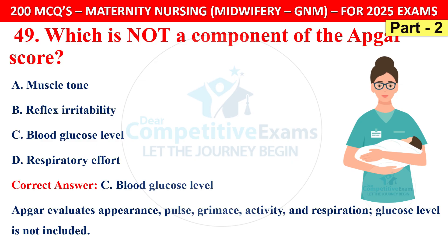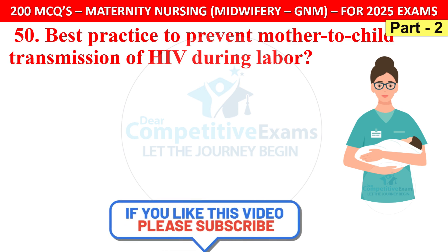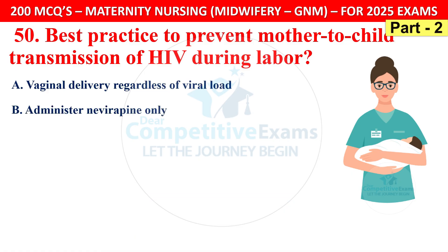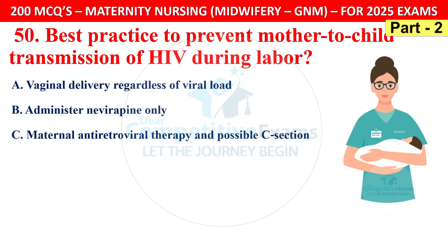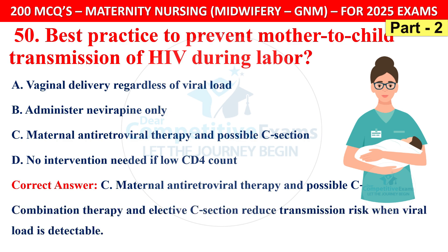Question 50: Best practice to prevent mother-to-child transmission of HIV during labor. The correct answer is C — maternal antiretroviral therapy and possible C-section. Combination therapy and elective C-section reduce transmission risk when viral load is detectable.